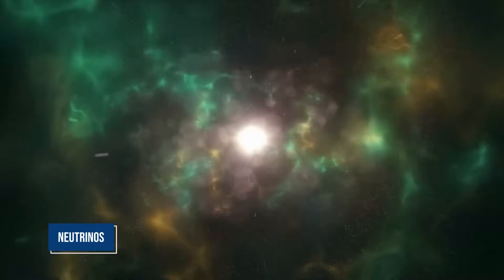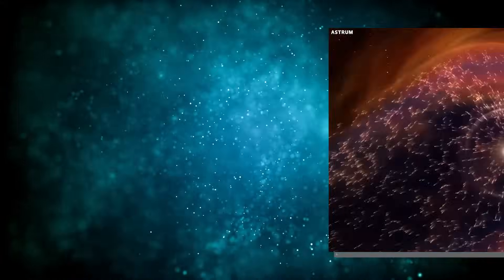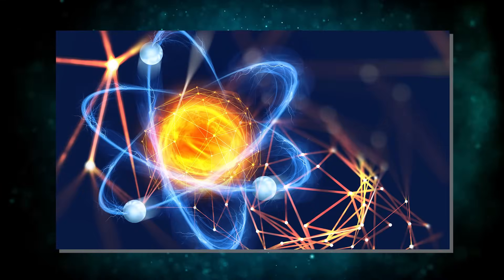Neutrinos are elusive, near-massless particles that have an uncanny ability to pass through matter virtually unhindered. This means that when a star like Betelgeuse explodes, these neutrinos are among the first messengers to relay the news.